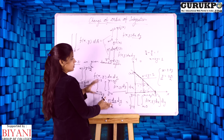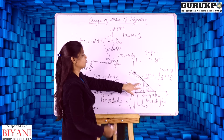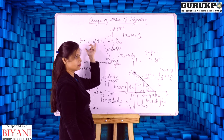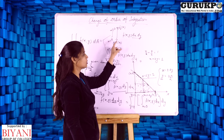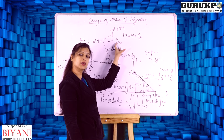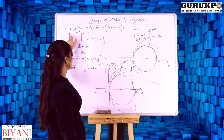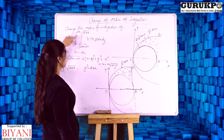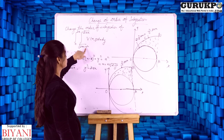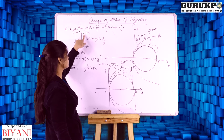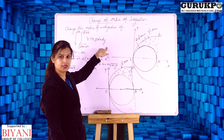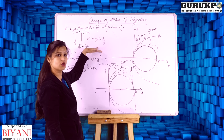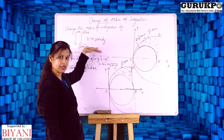So these are two methods for solving double integration by changing the order of integration. Let us take an example: integrate from 0 to 2a, and inner limits from √(2ax − x²) to √(2ax), of f(x,y) dy dx — we want to change the order of integration.